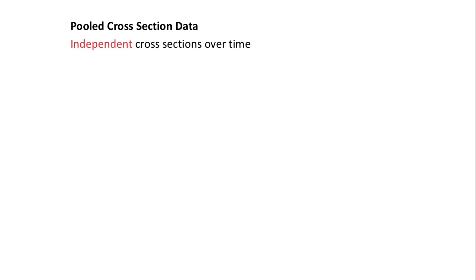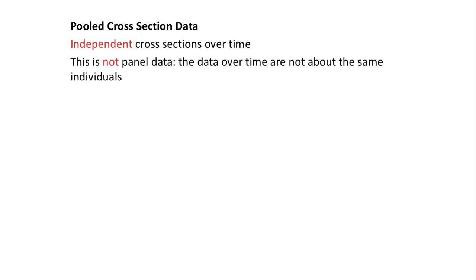Then we have pooled cross-sectional data. This is not panel data — don't fall into that trap. Why? Because now we have multiple cross-sections over time but they are independent cross-sections. The fact that you have multiple cross-sections over time does not mean you have panel data. Because if the cross-sections over time are independent of each other, you don't have panel data. The data displayed over time is not about the same individuals.